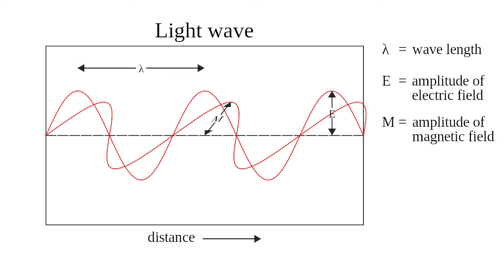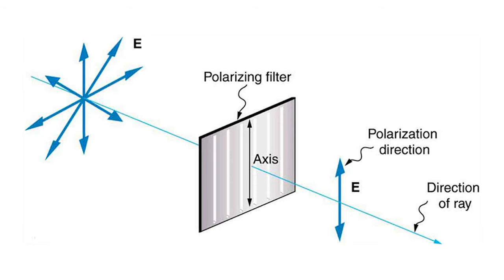Light is a wave. It can vibrate in different planes. A polarized light vibrates in only one plane. Light produced by the sun is unpolarized, meaning it vibrates in all planes. It can however be transformed into polarized light using a polarization filter, which means it will only let the light vibrate in a particular plane.